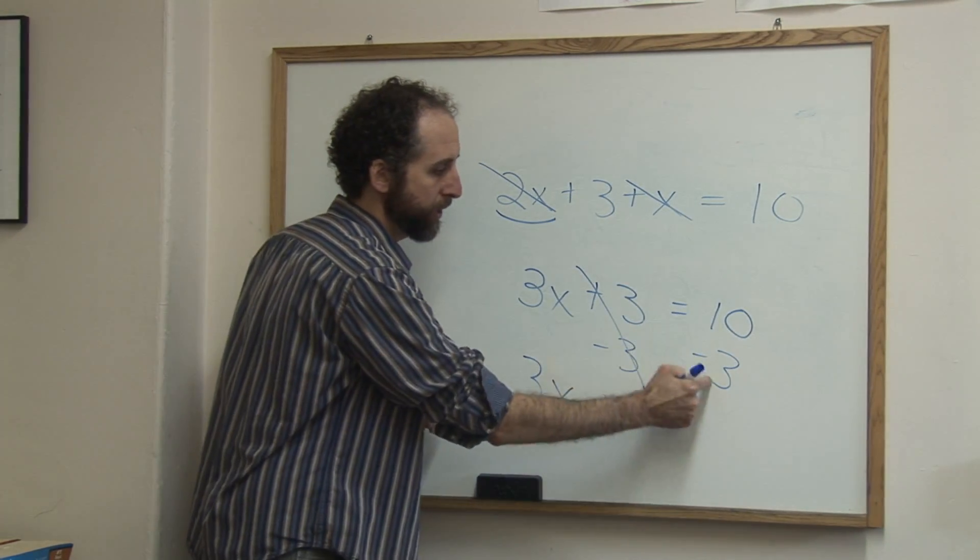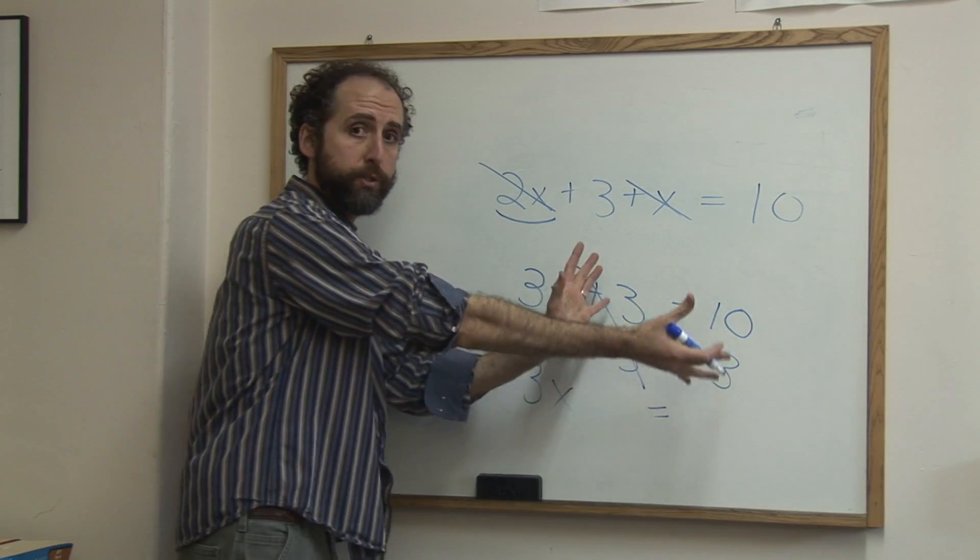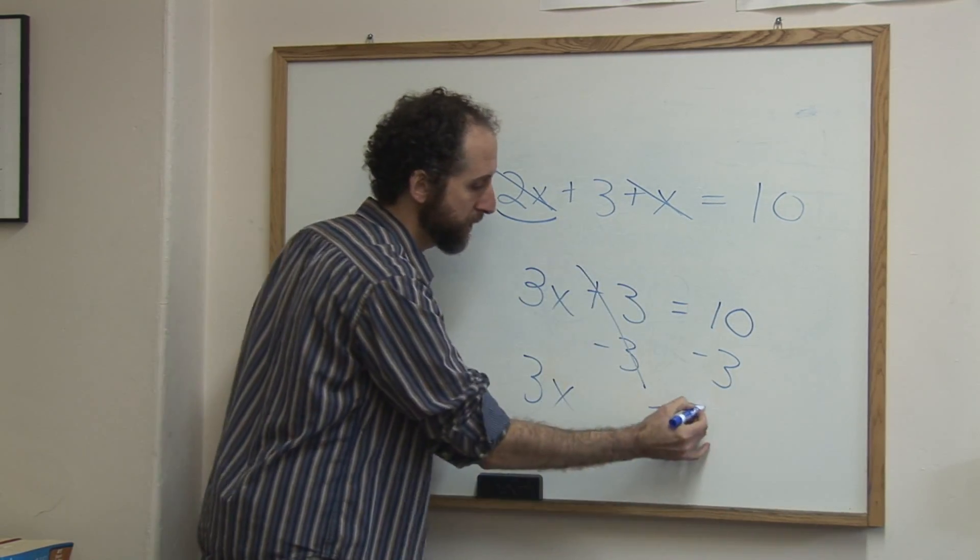On this side, we have 10 minus 3. Whatever you do to one side, you have to do to the other. So 10 minus 3 is 7.